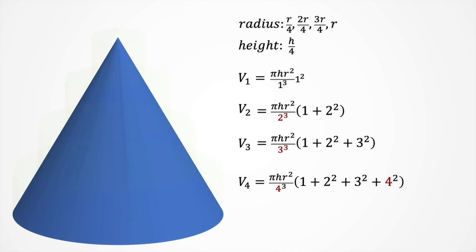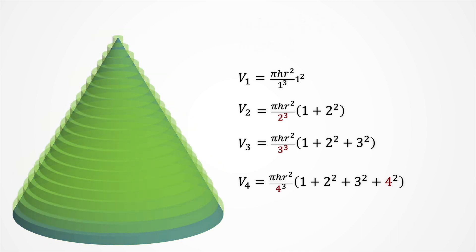And this way, for n cylinders, we will end up with a general expression, dividing by n cubed, and multiplying by 1 plus 2 squared plus 3 squared, till n squared.